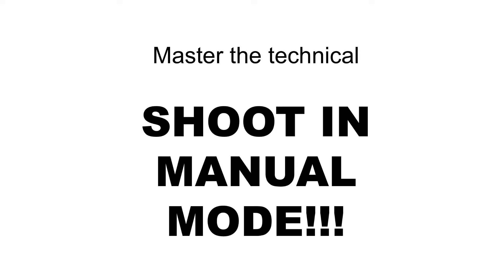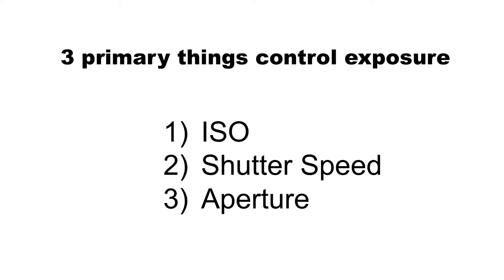I will always emphasize this: shoot in manual mode. I cannot emphasize this enough — I've had some of the most expensive cameras ever and I still shoot in manual mode. Sometimes the camera won't see everything that really needs to be seen. Three primary things to control your exposure: one is your ISO or film speed, the second is your shutter speed, and the third is aperture.